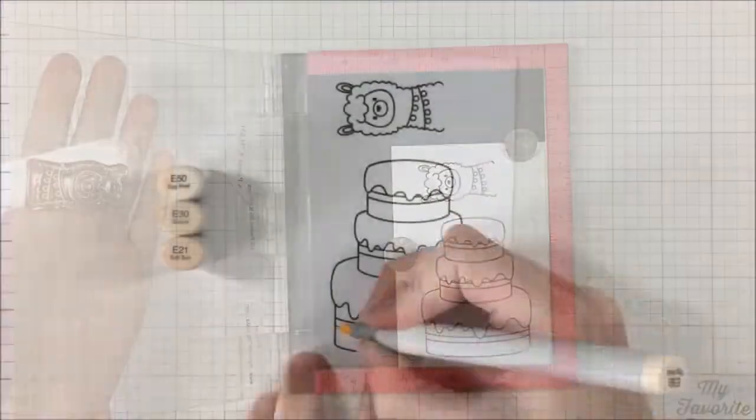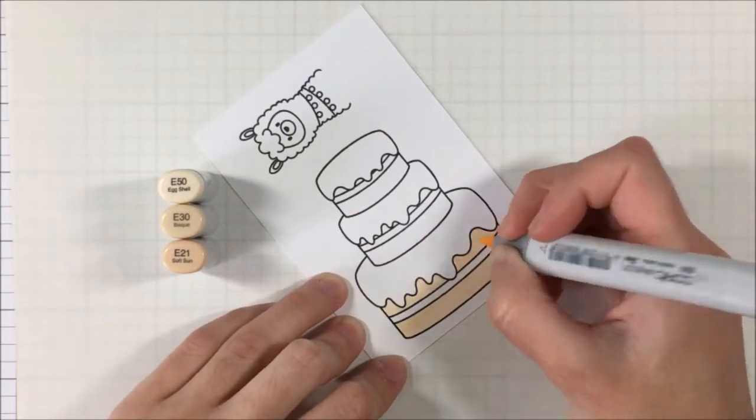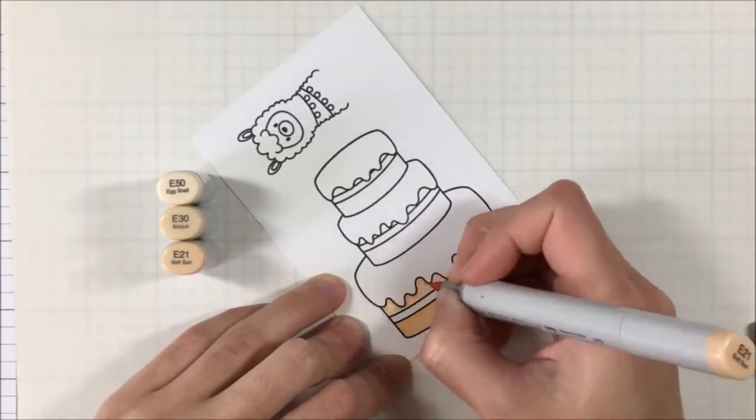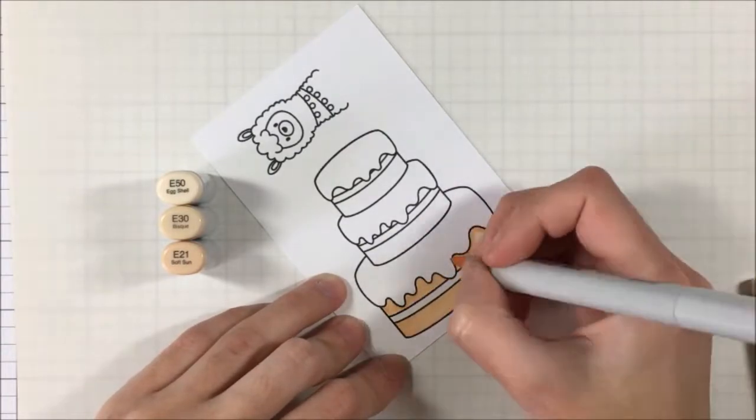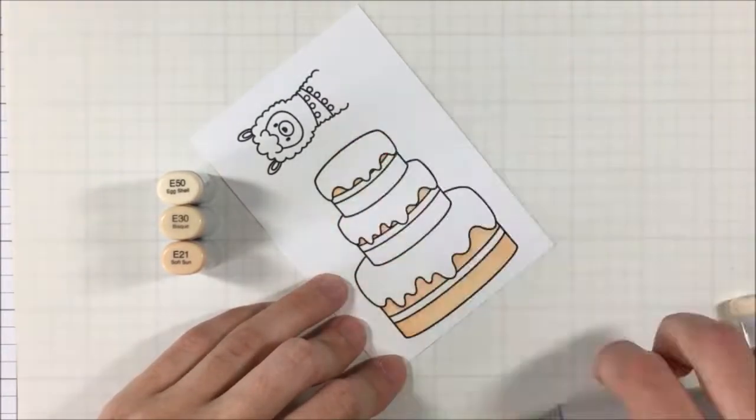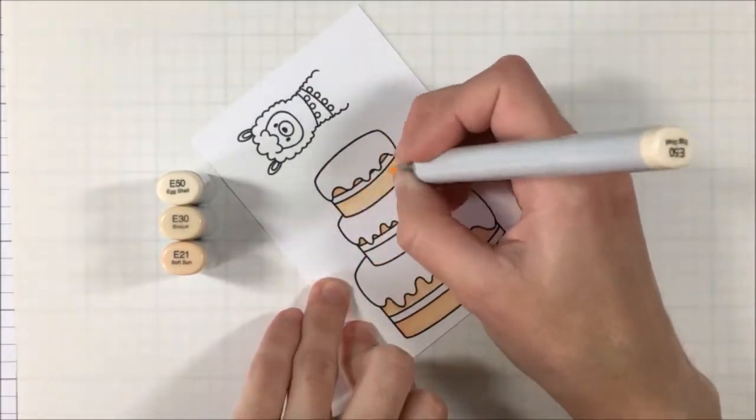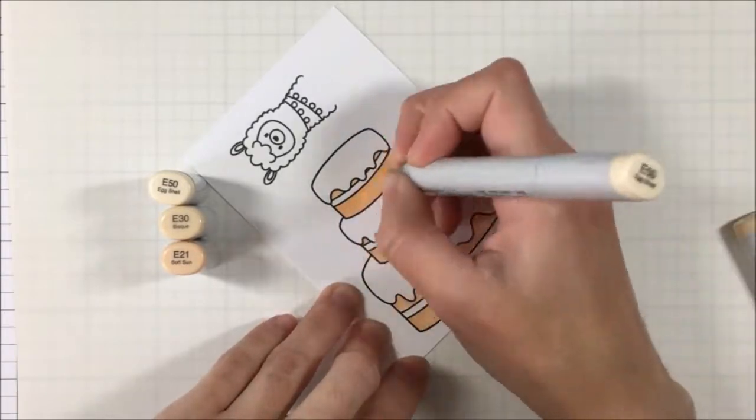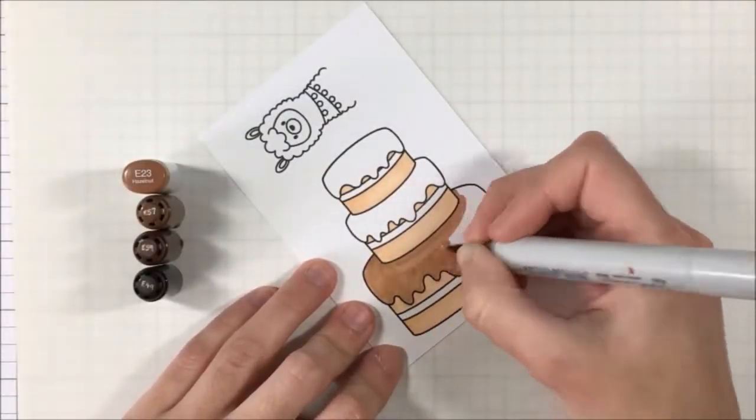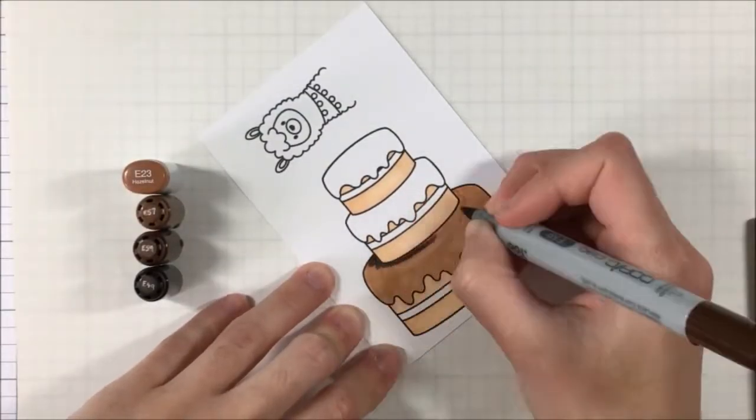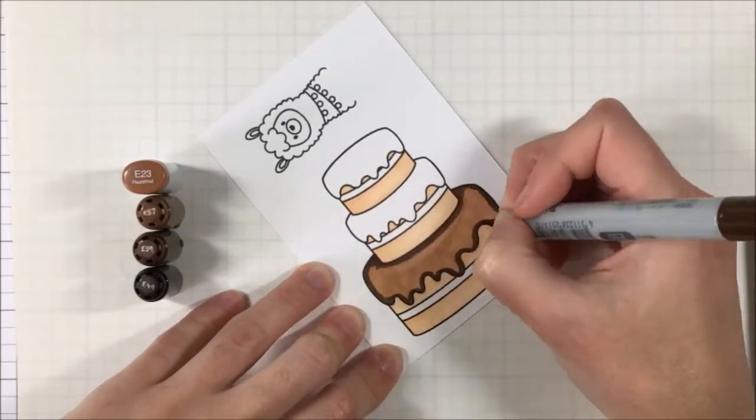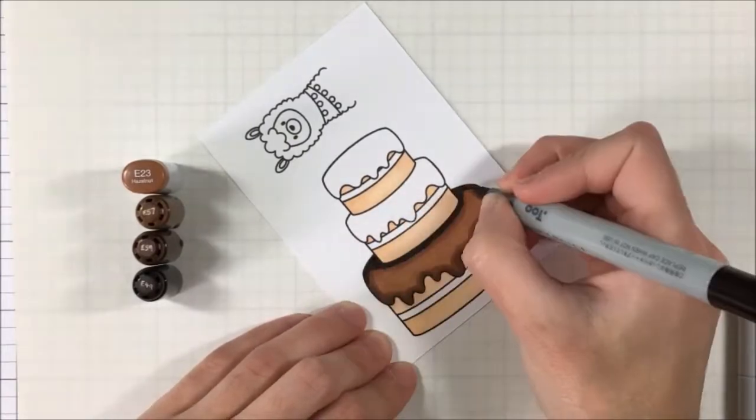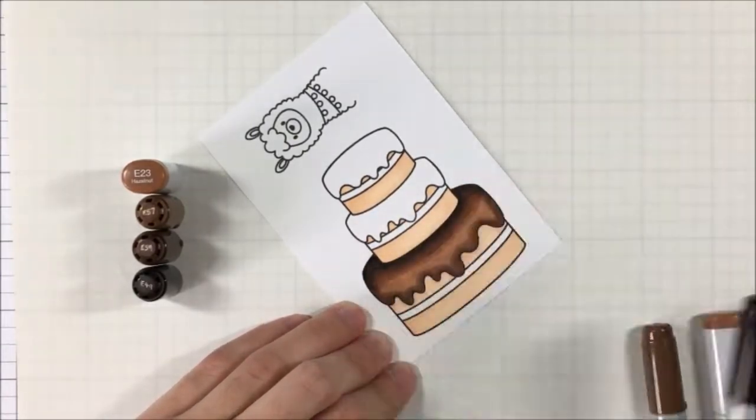We're going to move on to the Copic coloring. For the cake I used some E markers - I have E50, E30, and E21 - and I just added some shading to each of the tiers of the cake. I wanted this to be like a simple vanilla cake with some chocolate frosting. I'm going to use some of my darker E colors to color the tops of the cake to make it look like chocolate. I like to start with my lightest color to get a base coat down, then go in with my second darkest to my lightest, and then add my darkest and go back out to my lightest again.